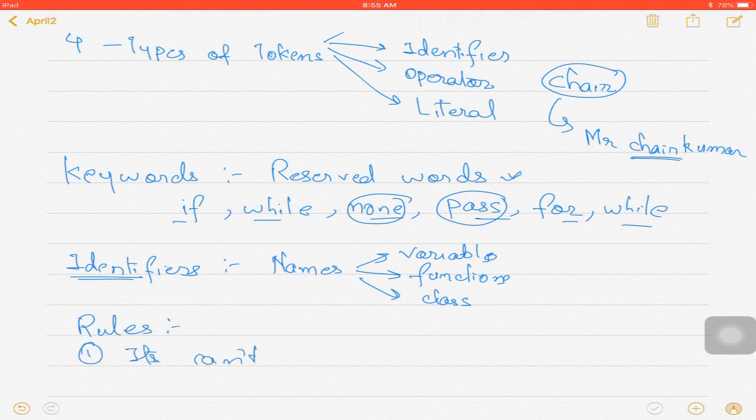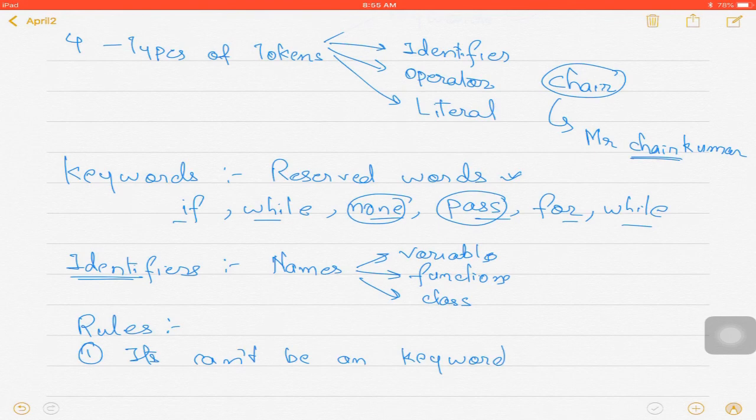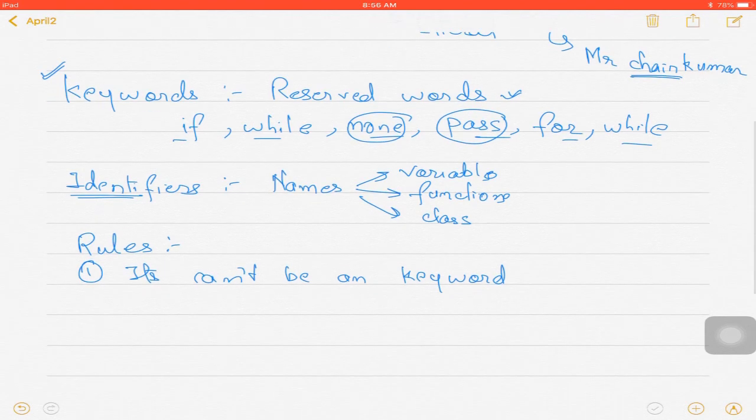Rule 1: It can't be a keyword. As I said, in case of keywords, they have a particular purpose, so they cannot be used to name a variable. If I write something of this sort like 'while is equal to 10,' I cannot do that because while has a particular meaning and I cannot use it to identify 10.